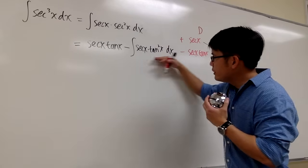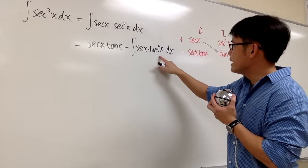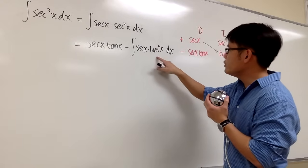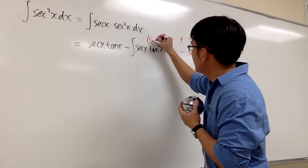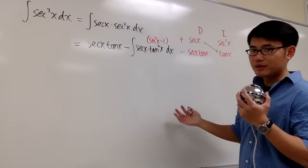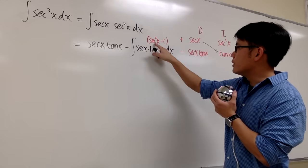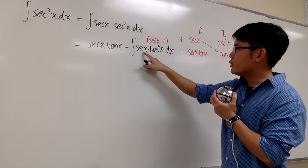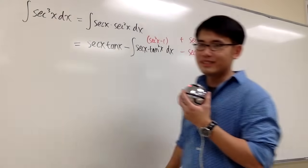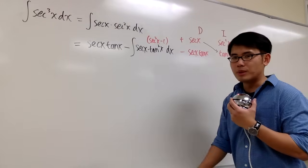Now if we can do this integral, we'll be done. We have secant x tangent squared x. Let's apply the identity: tangent squared x is the same as secant squared x minus 1. When you distribute secant x into the parentheses, you're going to produce secant to the third power — which happens to be what we started with. So this is one of those repeated integration by parts questions.